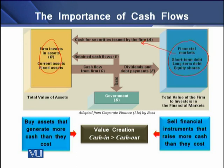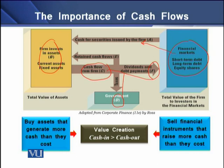When the firm uses these assets, it produces goods and sells them in the market, thereby generating cash inflows. From these cash inflows, the firm pays a certain amount to fund providers in terms of dividends and debt payments. A portion is also paid to the government in the form of taxes, and the residual amount is retained in the business as retained earnings.